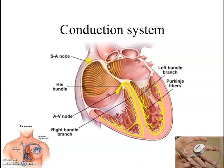The impulse is transmitted and the auricles are stimulated to contract. The SA node gets stimulated, then impulse is transmitted through P cells, and the auricles will contract. Then the AV node gets stimulated. From the AV node, we have a bundle of fibers called the Bundle of His.